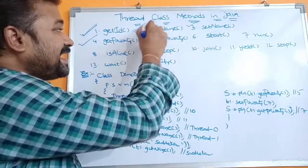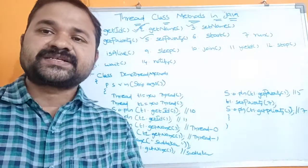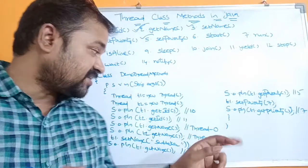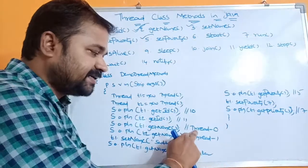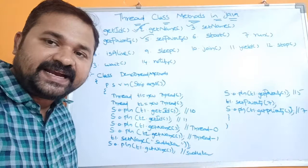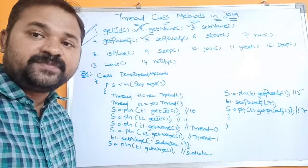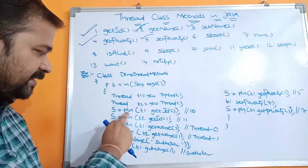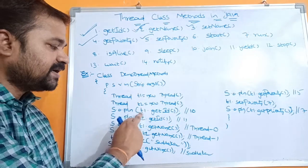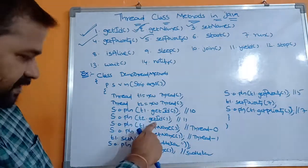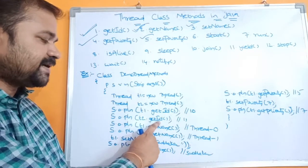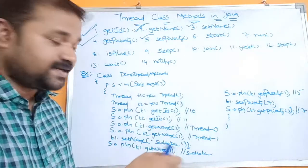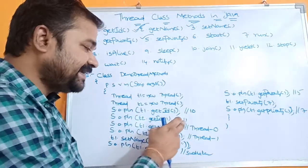What is the next method? The getName method returns the name of the thread. Generally the name will start from 0 onwards — the first thread will be named thread-0, the second thread will be thread-1, the third thread will be thread-2, and so likewise. We also used one more getId method: t2.getId(), which returns an identification number. Let us assume it returns a value called 11.